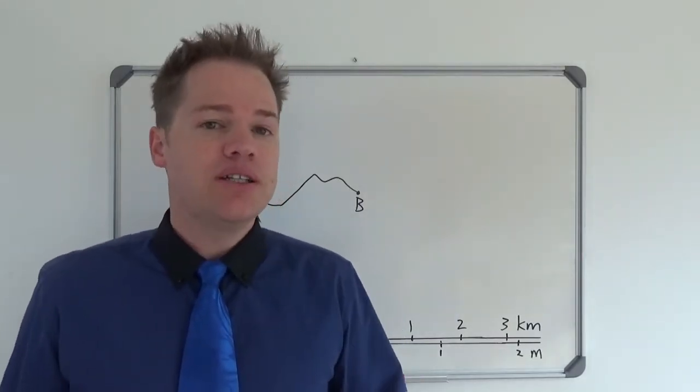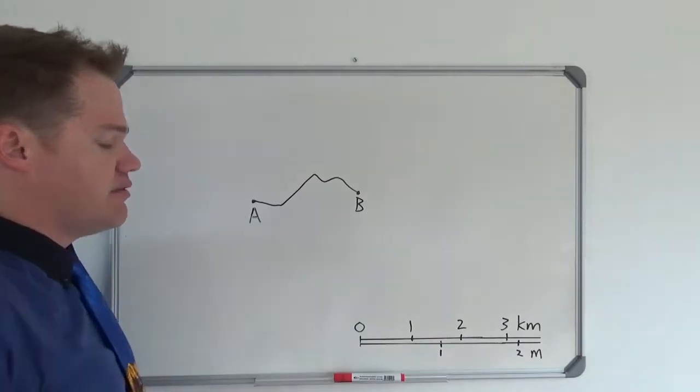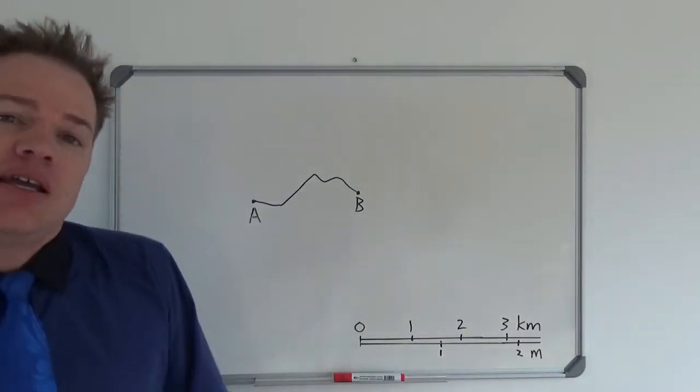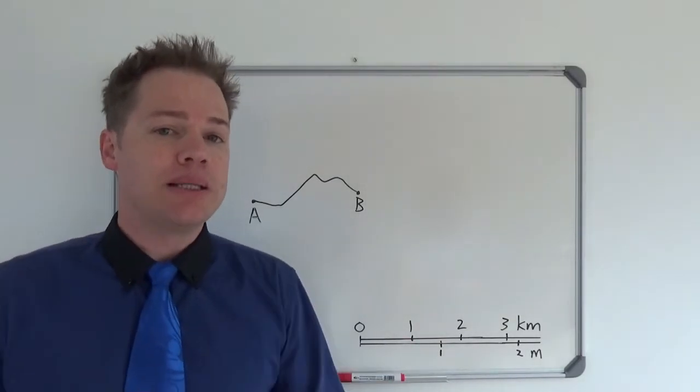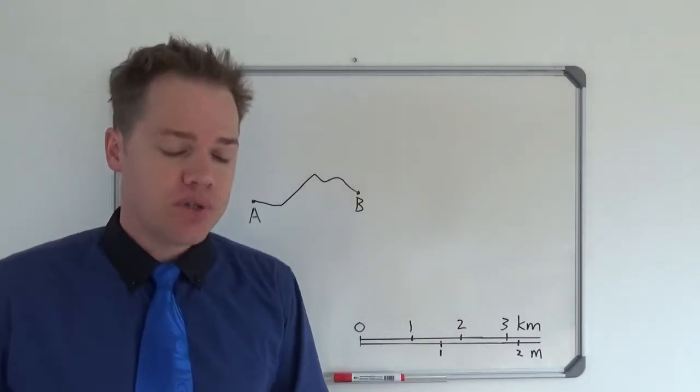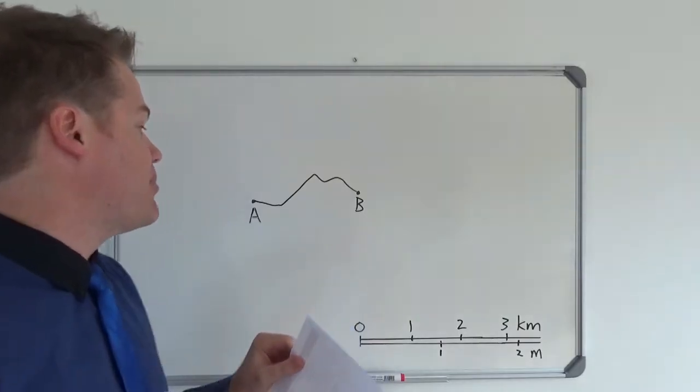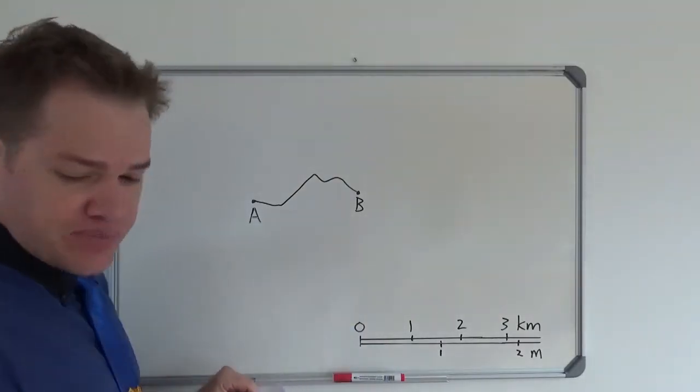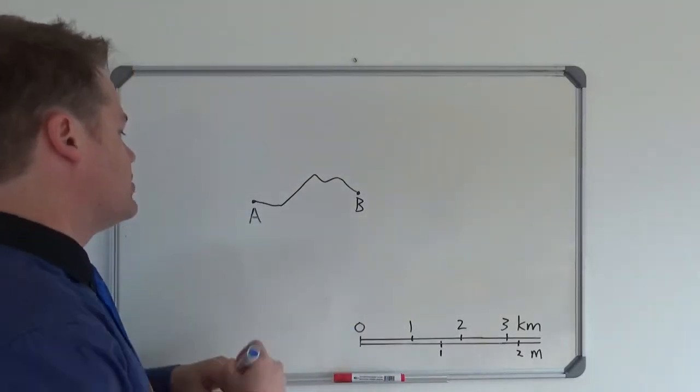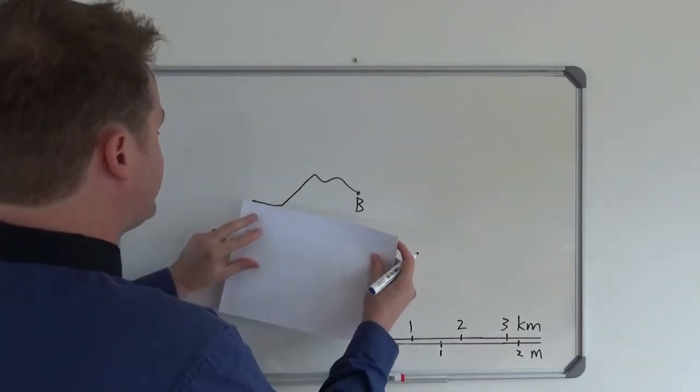So what do we do if we see a curved line like this and you have no special equipment to measure this with? What you are going to use is your test paper. So you have the map, you have a test paper, and you are simply going to use your test paper like this.